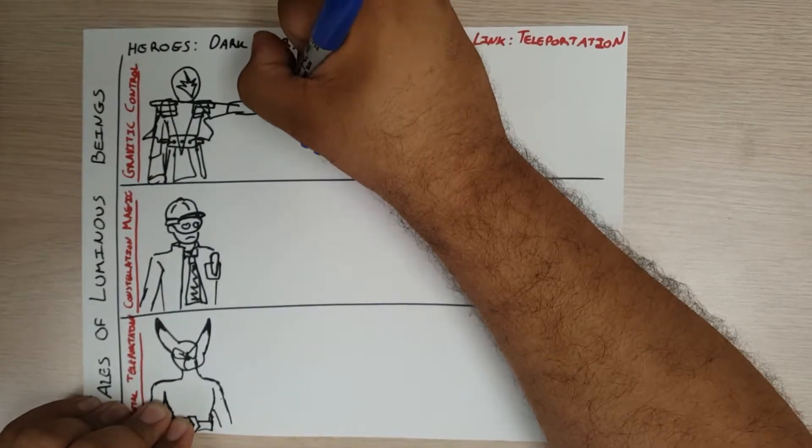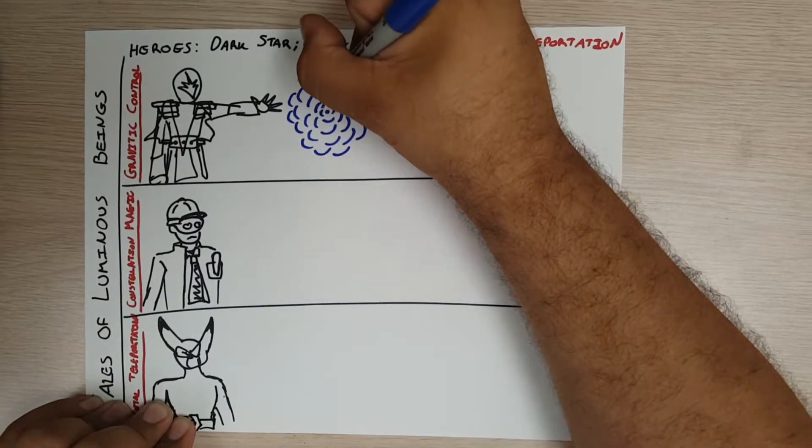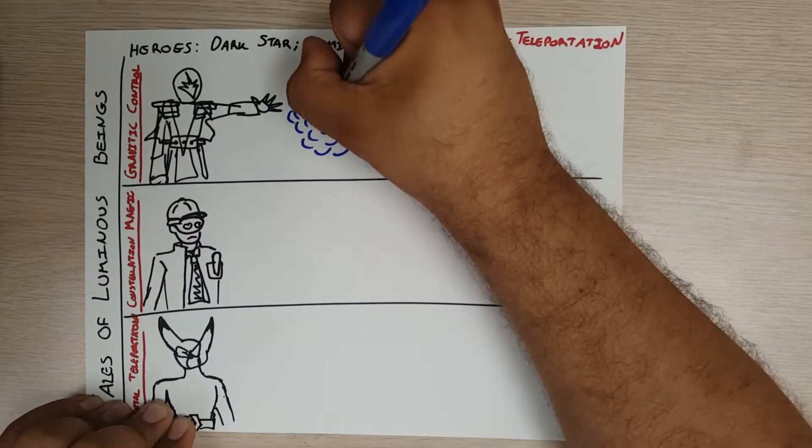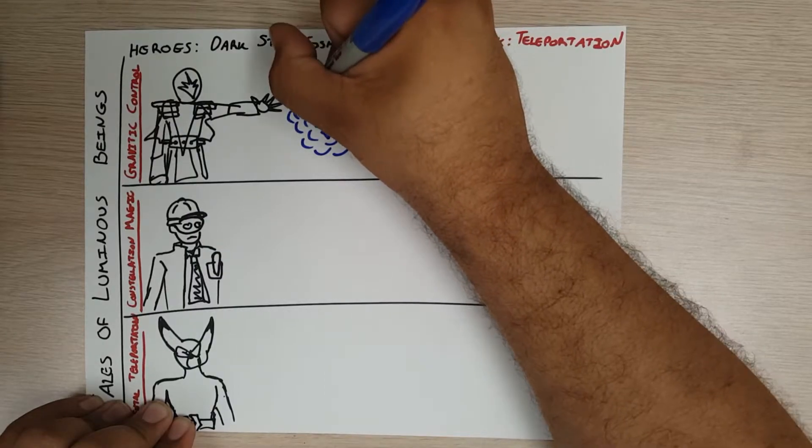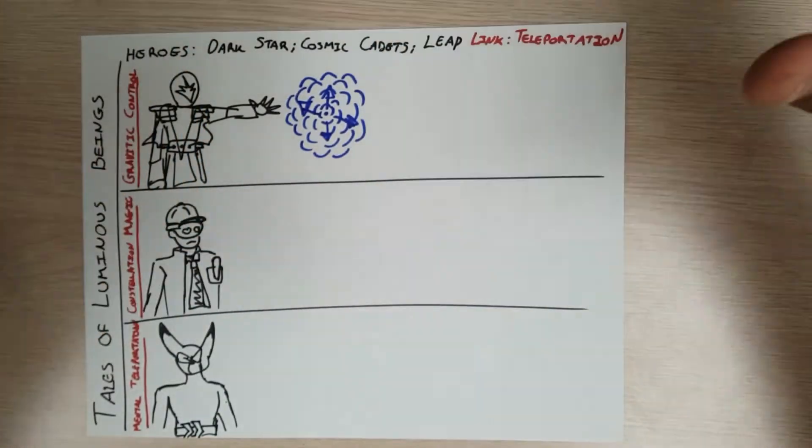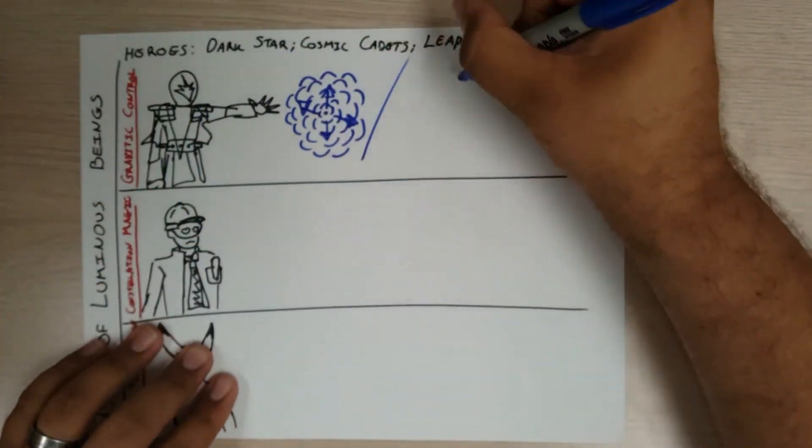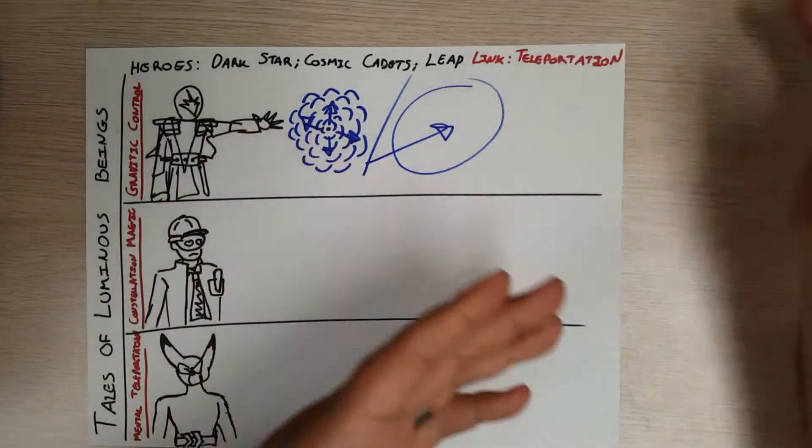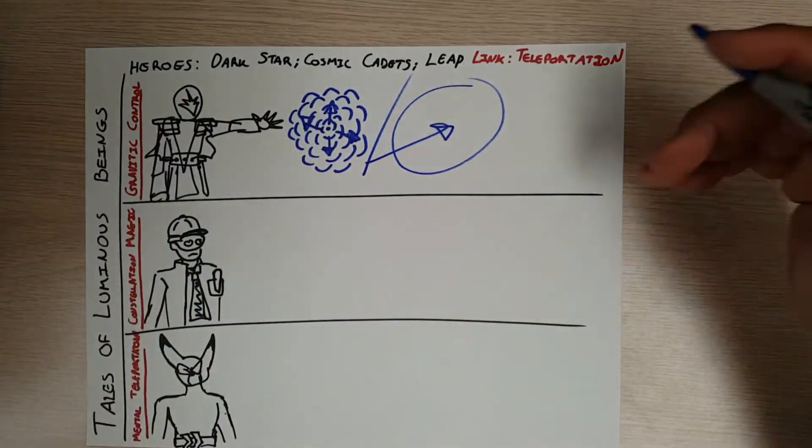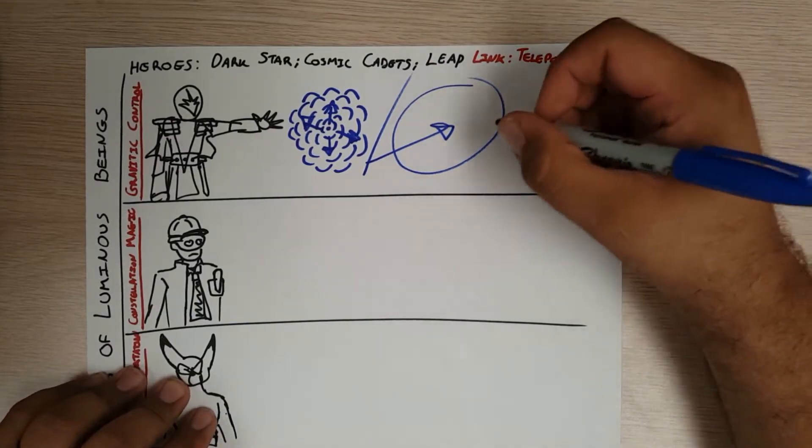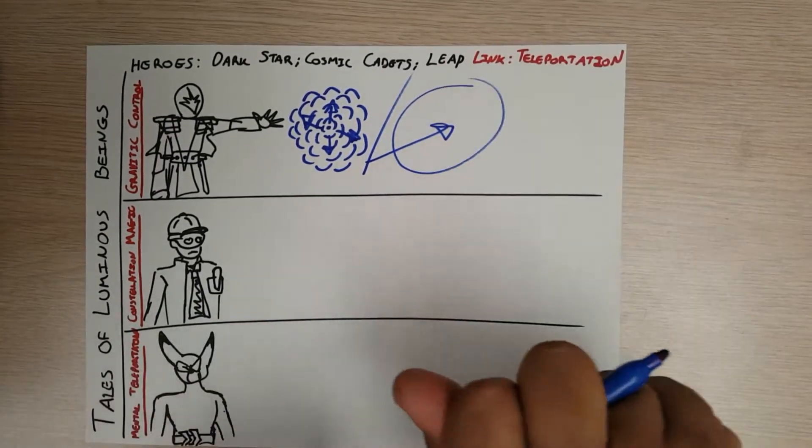My concept for Dark Star is that she distorts space and creates wormholes or tunnels for herself to teleport through. She uses her power of gravity to create an anti-gravity force which pushes away space and warps it until it opens up big enough that she can go through, then comes out on the other side. This isn't something I want her doing all the time, but it's a concept I have for her and I really like it.